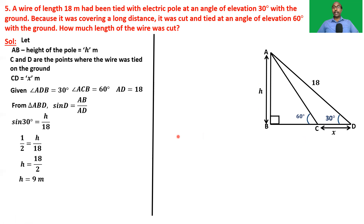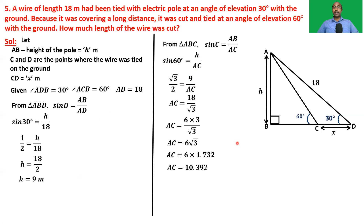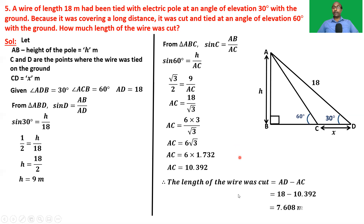From triangle ABC: sin C = AB/AC, so sin 60 = h/AC, giving √3/2 = 9/AC. Therefore AC = 18/√3 = 18√3/3 = 6√3. Substituting √3 = 1.732, AC = 6 × 1.732 = 10.392 meters. The length of wire cut = AD − AC = 18 − 10.392 = 7.608 meters.